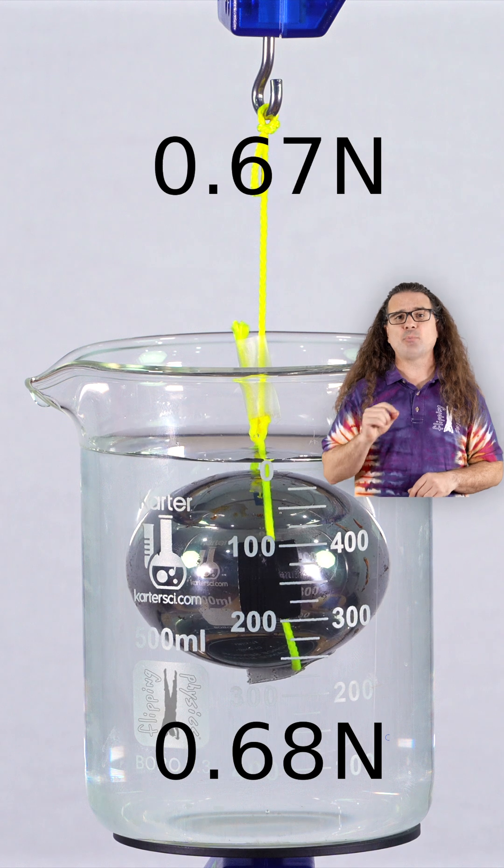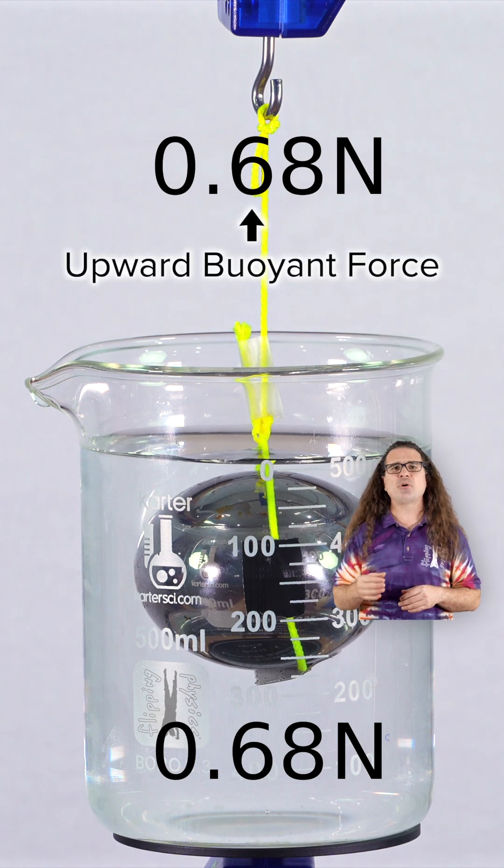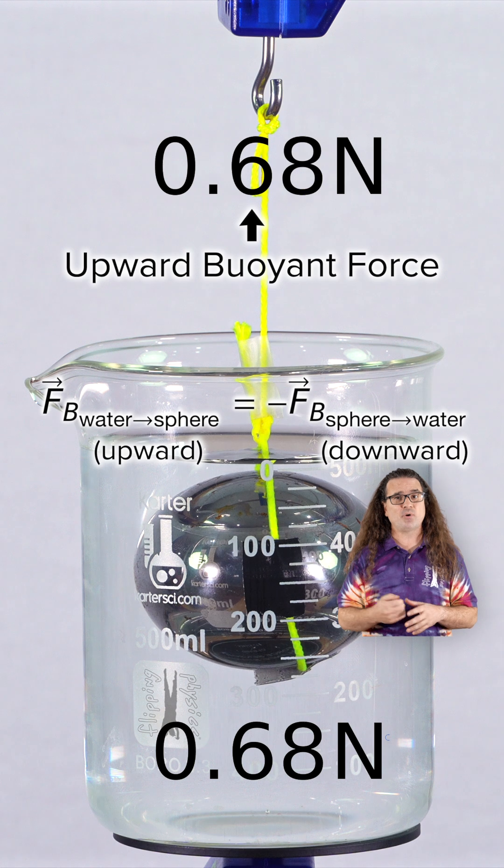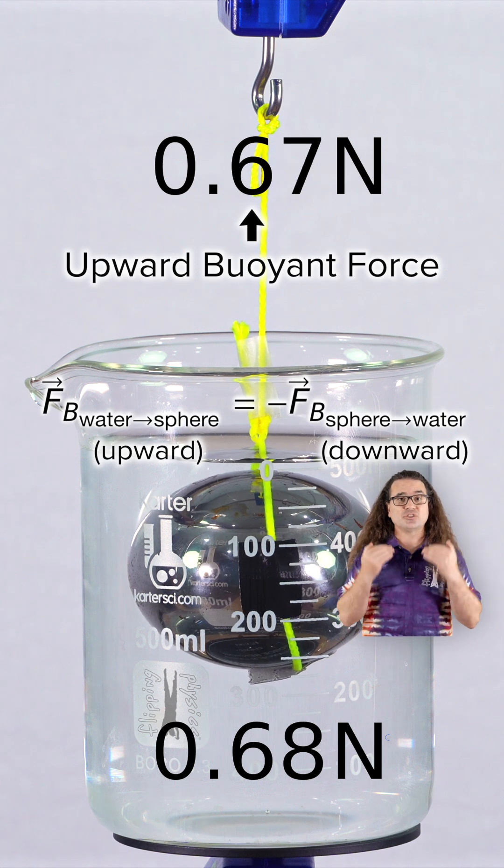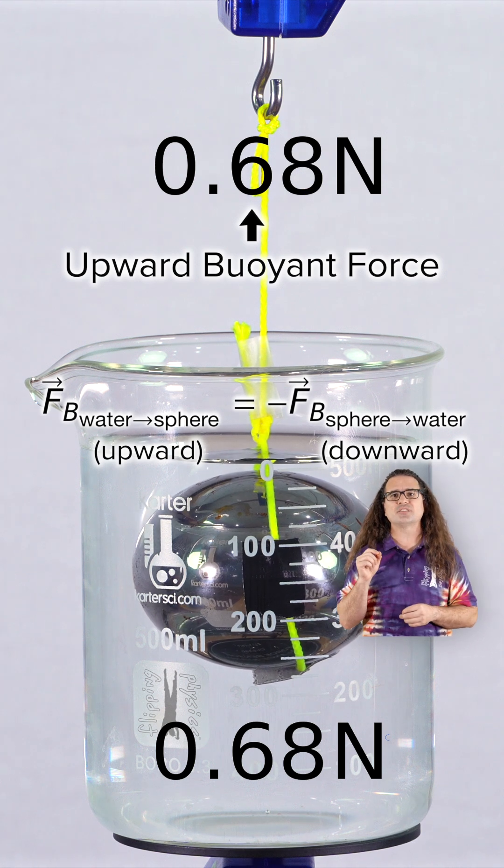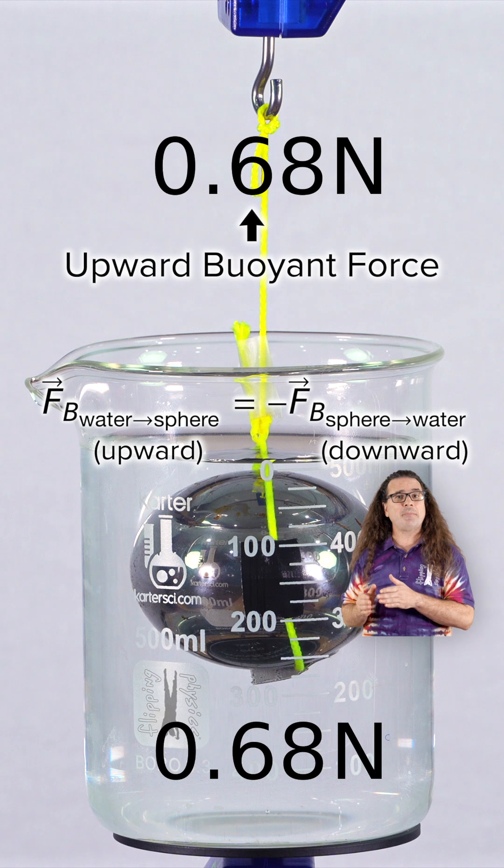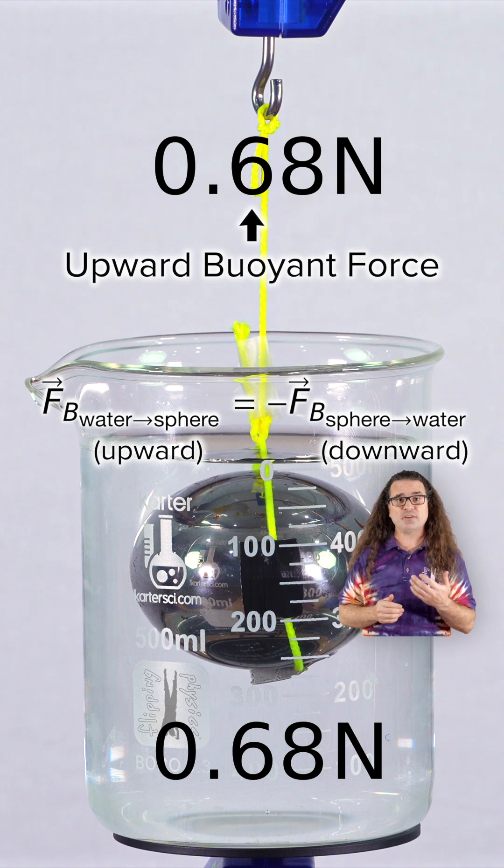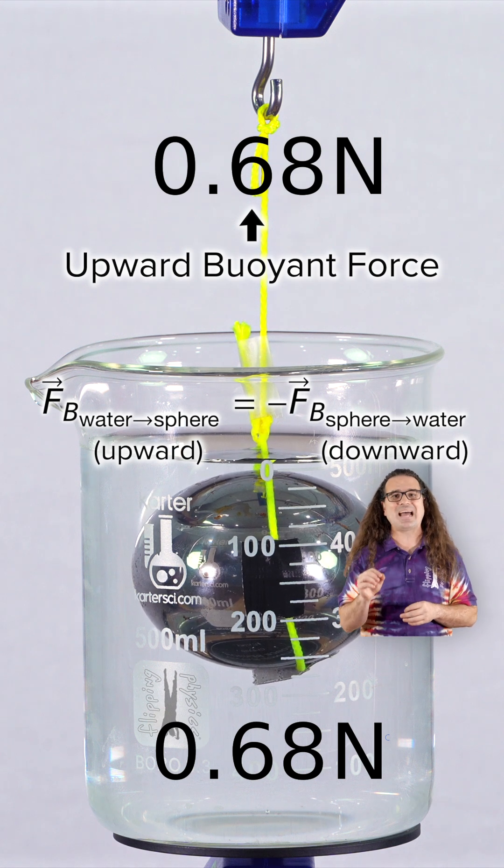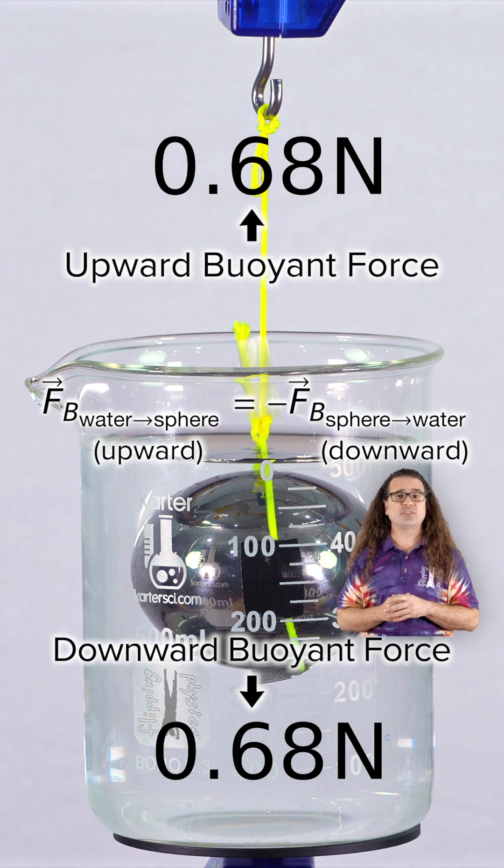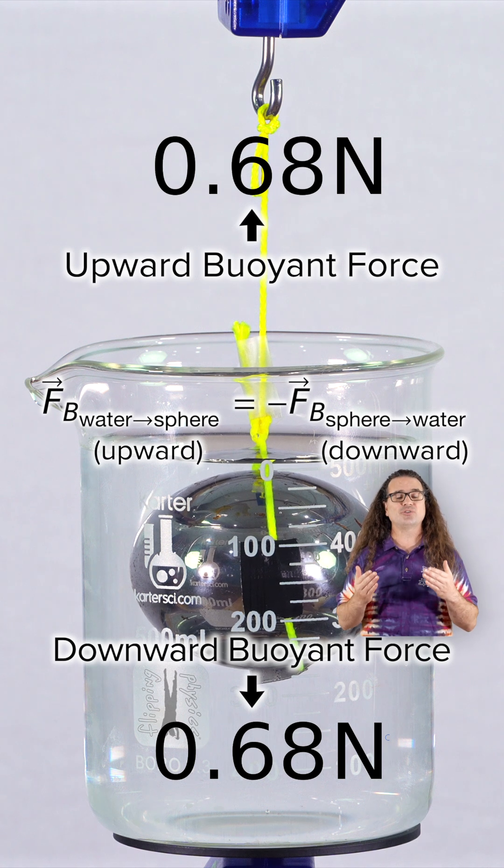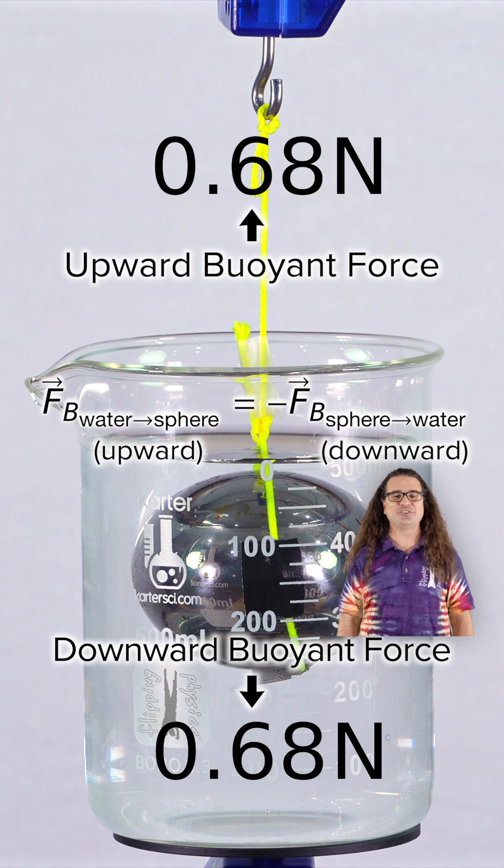This is because the upward point force you usually consider is part of a Newton's third law force pair. That upward point force is the force of 0.68 Newtons from the water on the sphere. But there is also an equal magnitude but opposite direction buoyant force of 0.68 Newtons downward from the sphere on the water. That is why the digital scale below the beaker of water also increases by 0.68 Newtons.